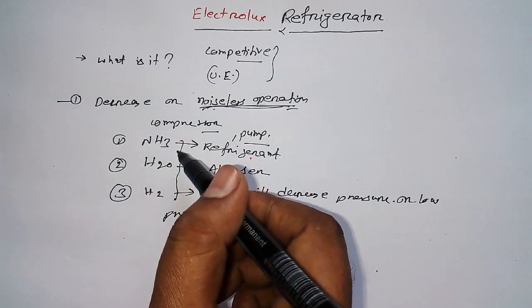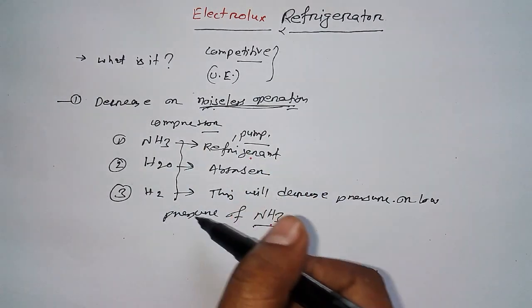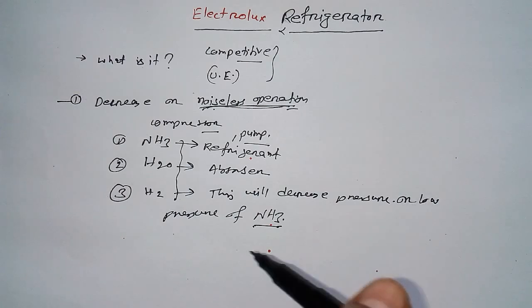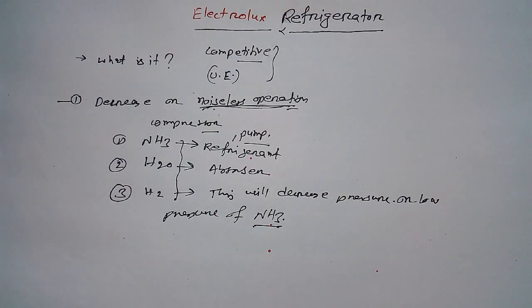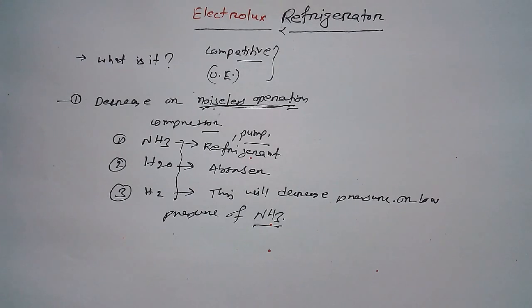NH3 as refrigerant, H2O as absorber, and H2 will create low pressure of NH3. So this is all about Electrolux refrigerator. Thanks for watching, hope you understand the topic. Hope to see you again in my next video. Bye bye.